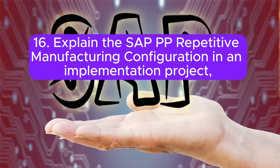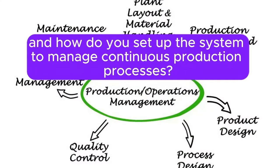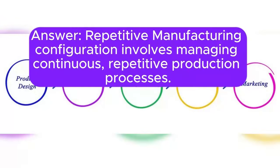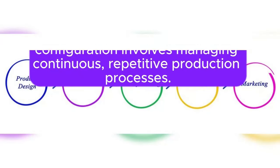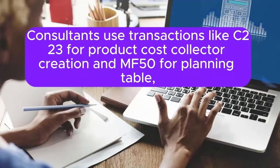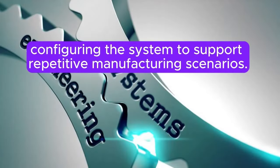Question 16: Explain the SAP PP repetitive manufacturing configuration in an implementation project. How do you set up the system to manage continuous production processes? Repetitive manufacturing configuration involves managing continuous, repetitive production processes. Consultants use transactions like C223 for product cost collector creation and MF50 for the planning table, configuring the system to support repetitive manufacturing scenarios.